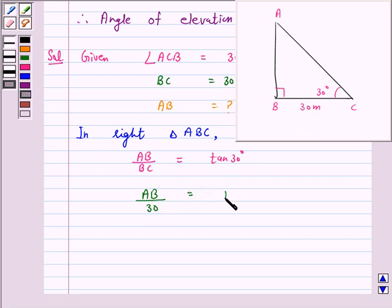Now, tan 30 is 1 over root 3. That is, AB is equal to 30 over root 3.